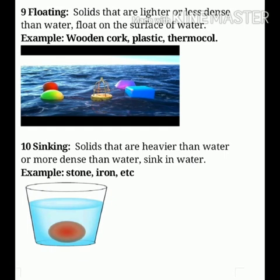There are certain objects around us that float on water while some sink in water. Why does this happen? Let's study. Floating: solids that are lighter or less dense than water float on the surface of water. For example, wooden cork, plastic, and thermocol.